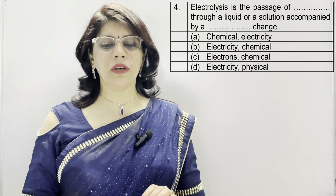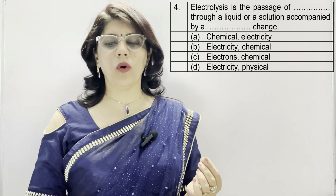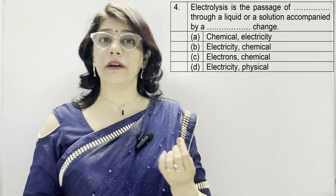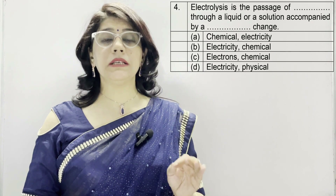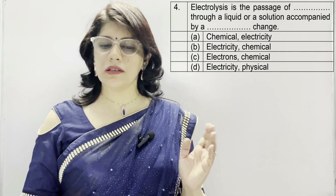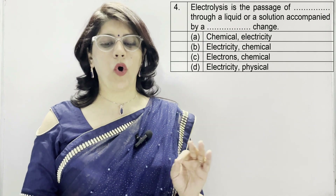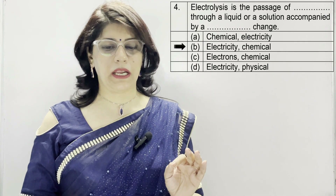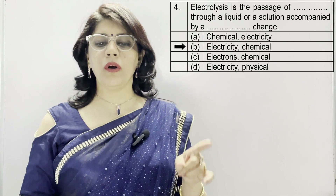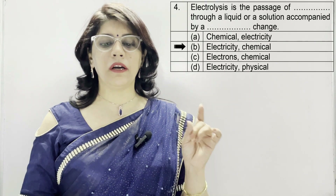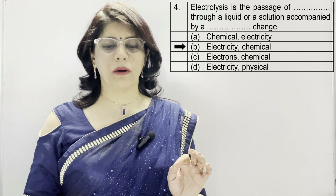Question 4: Electrolysis is the passage of dash to a liquid or a solution accompanied by a dash change. Option A: chemical and electricity. B: electricity and chemical. C: electrons and chemical. D: electricity and physical. Option B is correct — the passage of electricity to a liquid or solution accompanied by a chemical change.